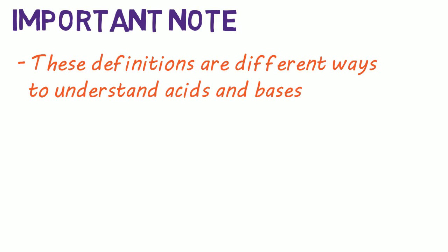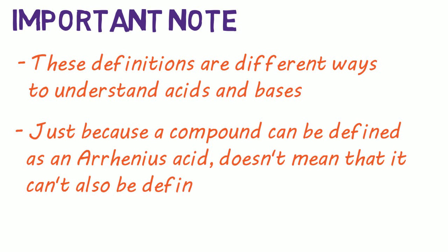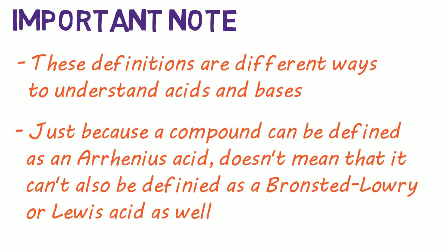It's important to note that these definitions are just different ways to look at and understand acids and bases. Just because a compound can be defined as an Arrhenius acid, for example, doesn't mean it can't also be defined as a Bronsted-Lowry or Lewis acid.